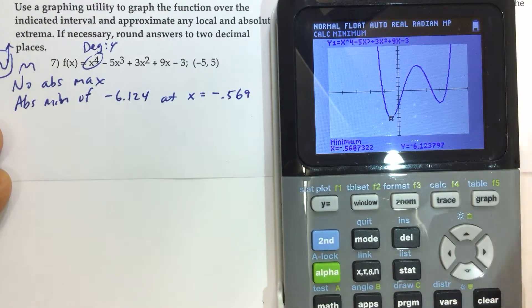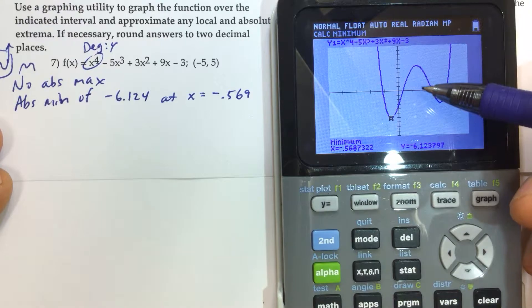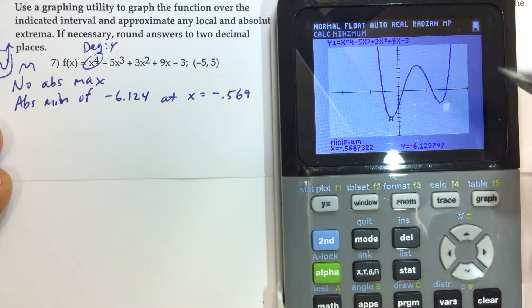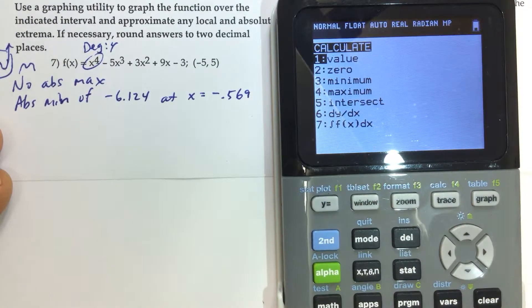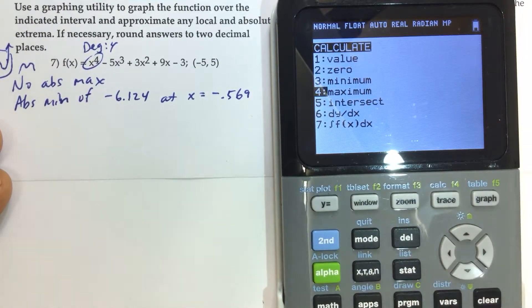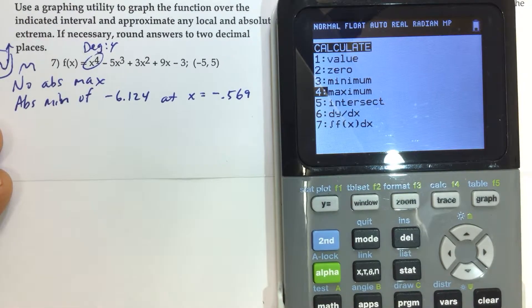And then we can see we have a local max right up here at about, I don't know, 1.2 and then what is that? 5 or 6, something like that. So we do second calculate again. But this time we're looking for the value of the maximum. That one right there. We could type a 4 or we could just scroll down to 4 and hit enter.